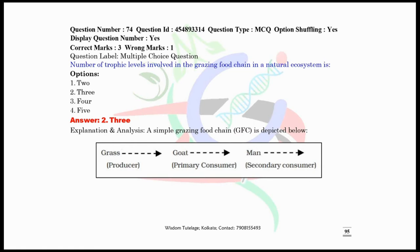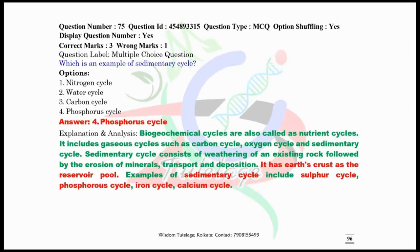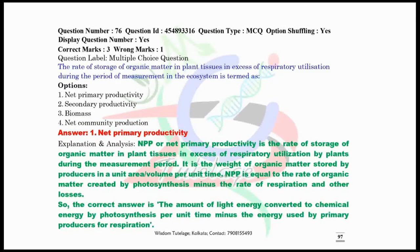Question number 75, which is an example of sedimentary cycle? Among the given options, the phosphorus cycle is the sedimentary cycle. Apart from phosphorus cycle there are some other cycles like sulfur cycle, iron cycle, and calcium cycle which are also sedimentary cycles. Now question number 76, the rate of storage of organic matter in plant tissues in excess of respiratory utilization during the period of measurement in the ecosystem is termed as net primary productivity.